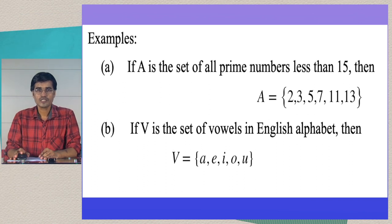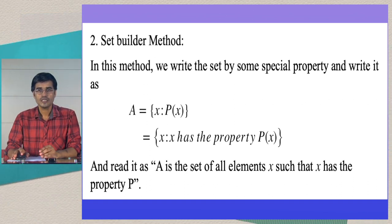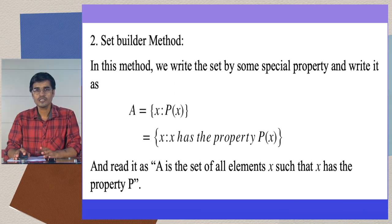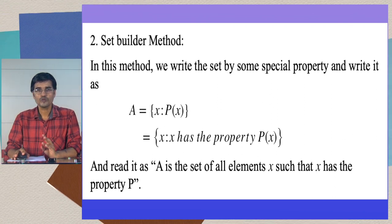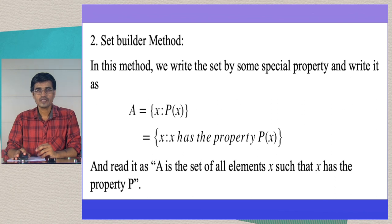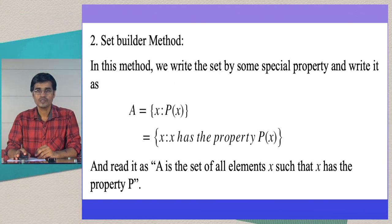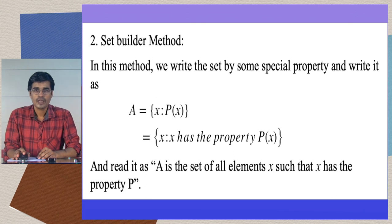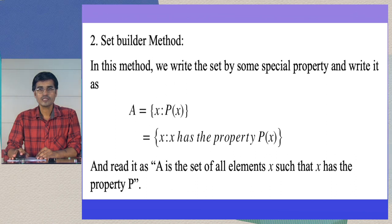The second method is the set builder method. In this method we write the set by specifying some special property rather than listing the elements. We write it as: A = {x : x satisfies property T(x)}, where T(x) is some property or formula. Here x represents all the elements, and x has some property. A is the set of all elements x such that x has property T.